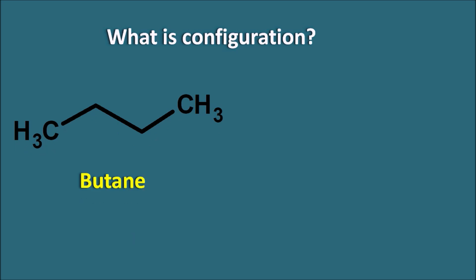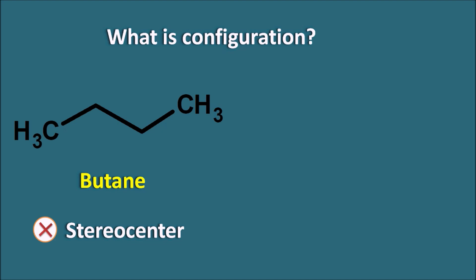Now what is the configuration of butane? In order to show the configuration and exist as configuration isomers, a compound should have a stereoactive center. But in the alkane, the stereoactive center is not present, so it cannot exist as different configuration isomers and it exists as a single compound.